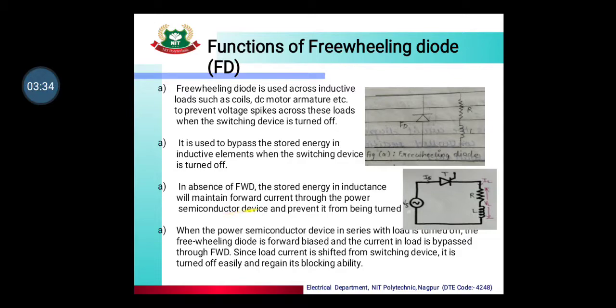In the absence of a freewheeling diode, the stored energy in the inductance will maintain the forward current through the power semiconductor device and prevent it from being turned off.